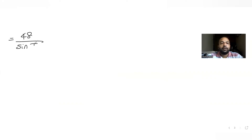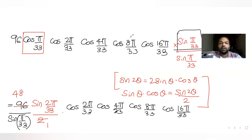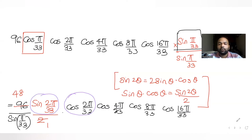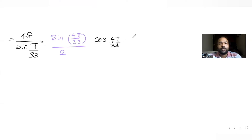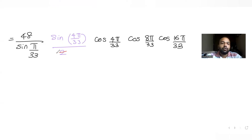We now have 48/sin(π/33) with sin(2π/33)·cos(2π/33) remaining. Applying the identity again, sin(2π/33)·cos(2π/33) = sin(4π/33)/2, with cos(4π/33)·cos(8π/33)·cos(16π/33) left. Cancelling 2 from 48 gives us 24/sin(π/33).